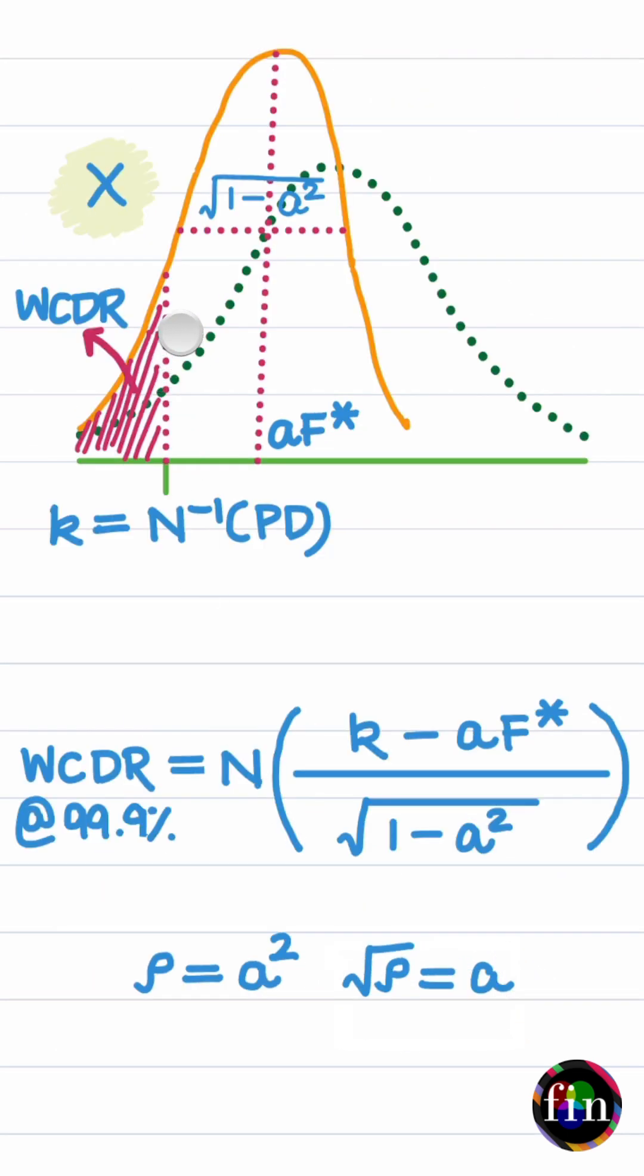In this situation, the worst case default rate of the company can be read to be the area underneath this new distribution to the left of the same threshold K, and this is what the Vasicek formula calculates.